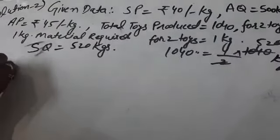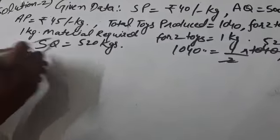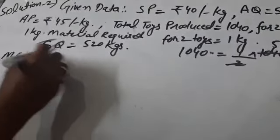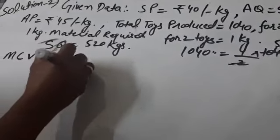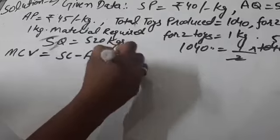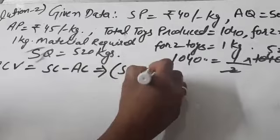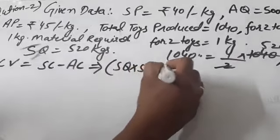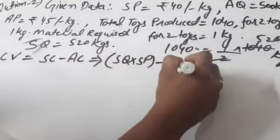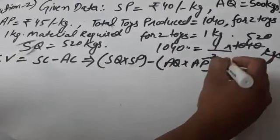We will calculate MCV, Material Cost Variance. Material cost variance equals standard cost minus actual cost, where standard cost is standard quantity multiply standard price minus actual quantity multiply actual price. We will put the values.